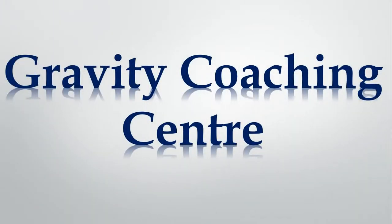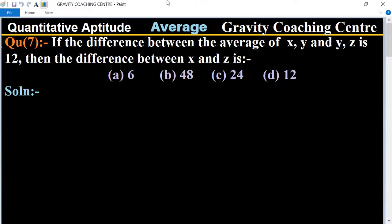Welcome to our channel Gravity Coaching Centre. Quantitative Aptitude, chapter Average, question number 7: If the difference between the average of x, y and y, z is 12, then the difference between x and z.